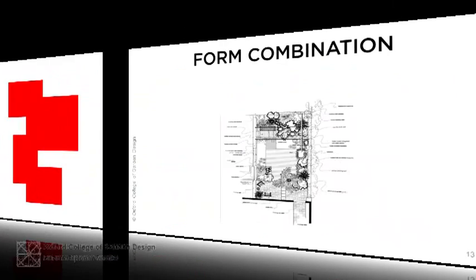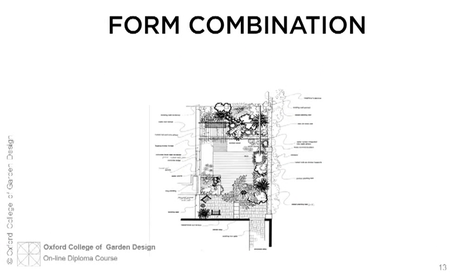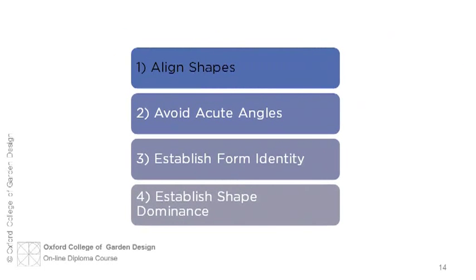The fourth guideline is to have one form dominate the overall composition, allowing form identity and a visual focal point. So to summarize, the designer should align shapes to create strong bonds and a strong route of flow. You must also avoid acute nasty angles. Avoid tangents at all costs because they create visually weak relationships in both paving and planting, and also dead space.